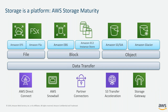AWS has a wide variety of storage services. We offer file storage like Amazon EFS and Amazon FSx, as well as block storage like Amazon EBS and Amazon EC2 instance storage. For backup use cases, some of the most popular services are object storage — Amazon Simple Storage Service, otherwise known as Amazon S3 — as well as Amazon S3 Glacier services.